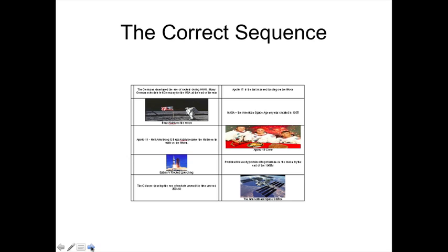The correct sequence of these events are as listed here. The original Chinese development of the rocket as a weapon around AD 200. Around 1700 years later, the application of rocket technology by the Germans.